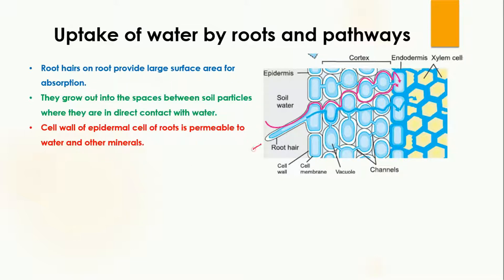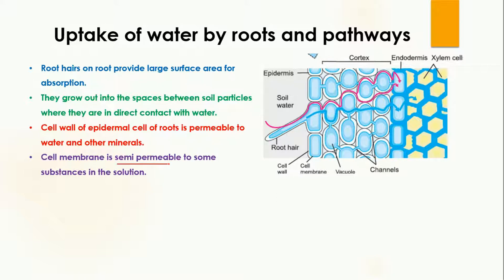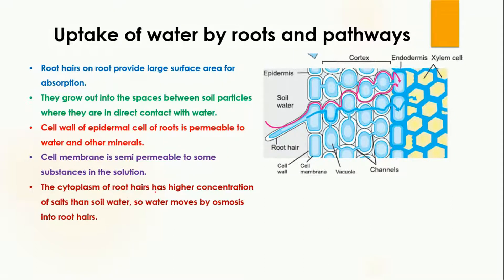The cell wall of the epidermal cells of the root is permeable to water and other minerals, meaning that water can easily enter into the root. The cell membrane, however, is semi-permeable, meaning it allows some substances to enter into the root hairs while some substances cannot enter. So the cell wall is permeable while the cell membrane is semi-permeable.